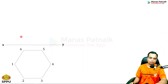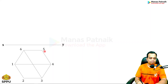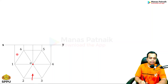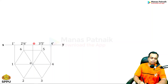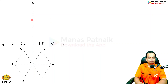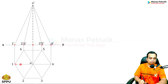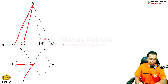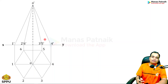Start by drawing the hexagon in the top view. Name the corners one through six, joining one with four, three with six, and five with two. Mark the apex. In the front view, corners two and six appear on the same line, labeled as two-dash and six-dash. Draw the axis of 75 mm as a dash-dot line, then connect the base points to the apex — o-dash in the front view.